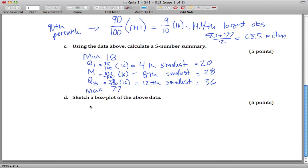To sketch a box plot, we need the interquartile range, which is Q3 minus Q1, which is 36 minus 20, or 16.